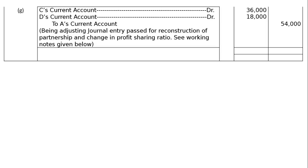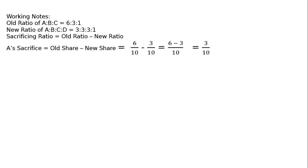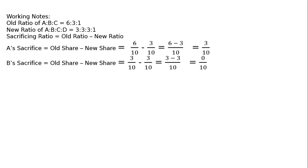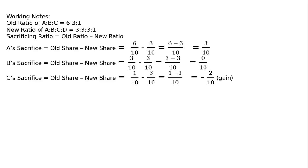Working notes: Old ratio of A:B:C = 6:3:1. New ratio of A:B:C:D = 3:3:3:1. Sacrificing ratio = Old ratio minus New ratio. A's sacrifice = 6/10 minus 3/10 = 3/10. B's sacrifice = 3/10 minus 3/10 = 0/10. C's sacrifice = 1/10 minus 3/10 = minus 2/10 (gain).